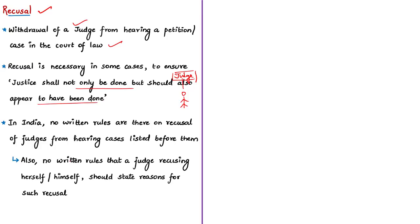This is one example of the uncle judges syndrome. This syndrome has many examples — for instance, some relatives of judges could be practicing as lawyers in the Supreme Court, creating a chance that the judge may hear cases argued by their own relatives. Recusal of a judge from hearing a particular case is expected when a judge has a conflict of interest or when the judge has prior association with the parties in the case.